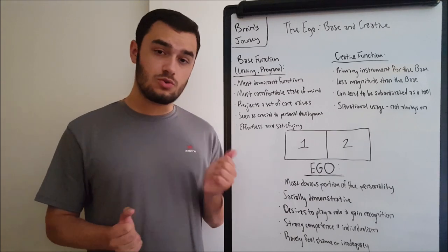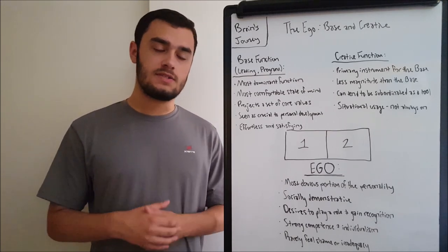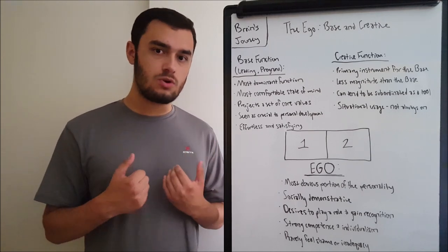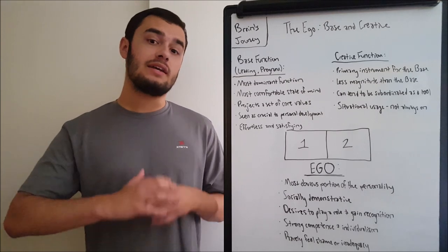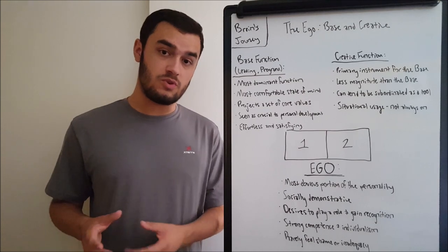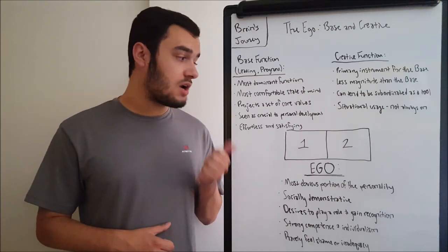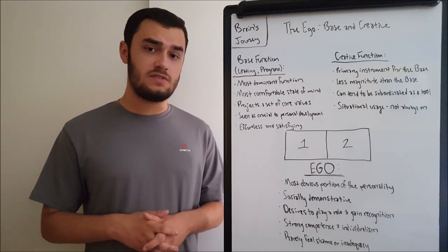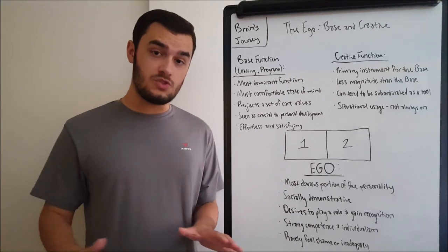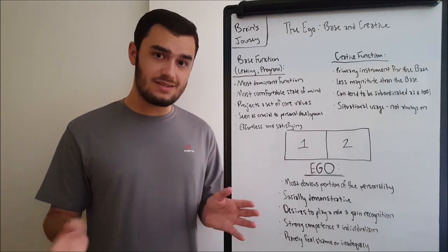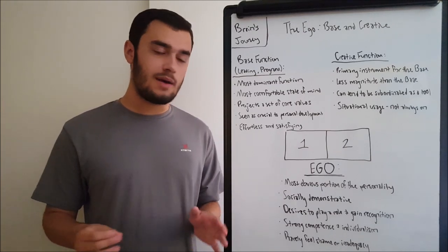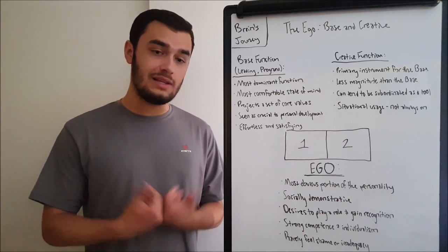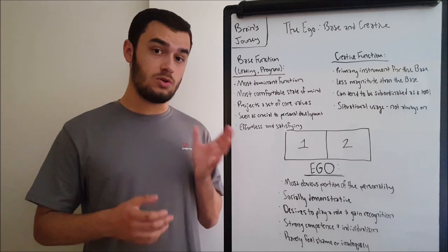This has a huge part in intertype compatibility. If somebody cannot maintain that core value expression, if somebody does not like receiving what you have to say about your core values, your base function, that has a lot to say about intertype relations and intertype compatibility as a whole. Another part of the base function is that it is seen as crucial to personal development. It is crucial in interpersonal areas. It matters a lot in our skills, our careers, what we go into our lives doing. And so it is seen as something that must constantly be applied, optimized, engaged in. And then the last thing I wanted to go over with the base function is that it is effortless. We always use it. It is very effortless. We do it all the time. And it is satisfying. It is something that gives us great personal satisfaction. Something that's always constantly on, always giving us satisfaction. We like to do this thing, basically, is the main lesson that you want to learn with the base function.